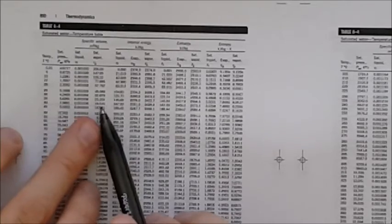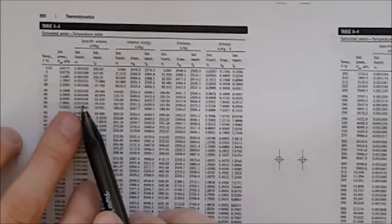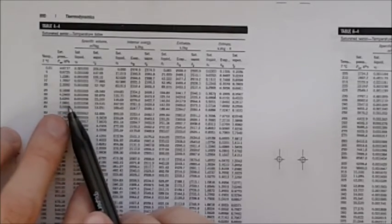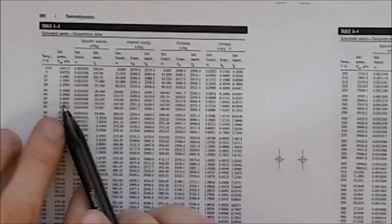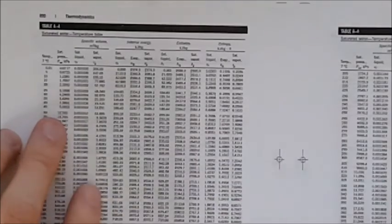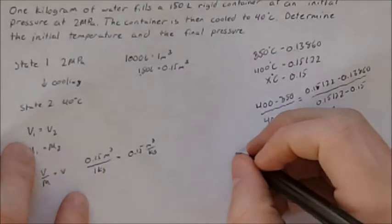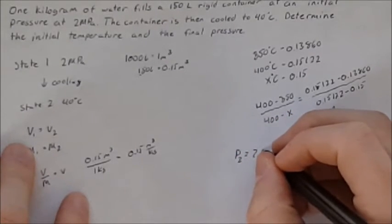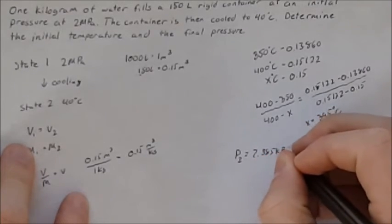0.15 falls in this range which means this is a mixture and because it's a mixture temperature and pressure will remain constant until it's pure liquid or pure gas. So the pressure labeled here is the final pressure at this state which is 7.3851 kilopascals.